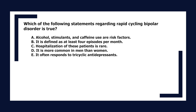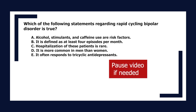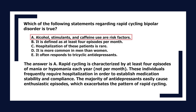Which statement regarding rapid cycling bipolar disorder is true? A. Alcohol, stimulants, and caffeine use are risk factors. B. It is defined as at least 4 episodes per month. C. Hospitalization is rare. D. It is more common in men. E. It often responds to tricyclic antidepressants. The answer is A. Rapid cycling is characterized by at least 4 episodes of mania or hypomania each year, not per month. These individuals frequently require hospitalization. The majority of antidepressants can cause manic episodes, exacerbating the pattern of rapid cycling.